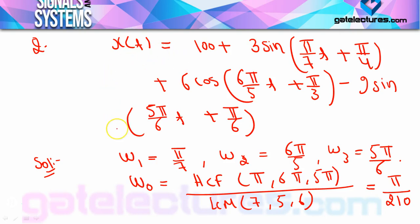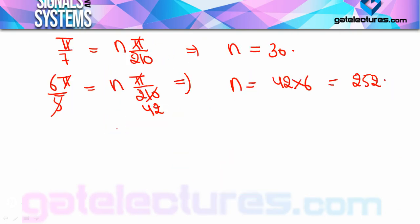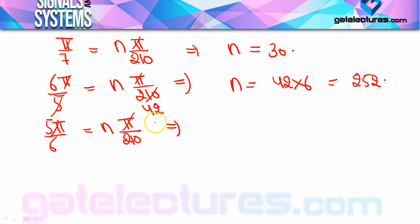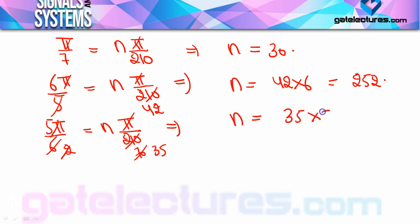For the third term, 5π/6 = n·(π/210). After cancelling π and simplifying: 210/6 = 35, so n = 35×5 = 175. The 175th harmonic is present. So the harmonics present are the 30th, 252nd, and 175th harmonics.